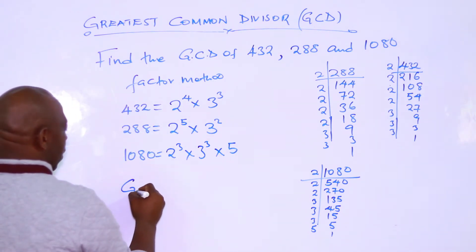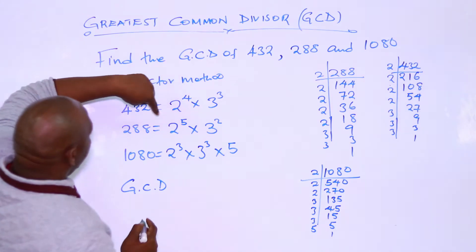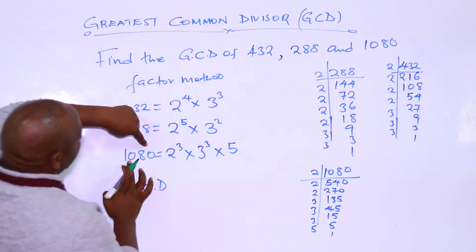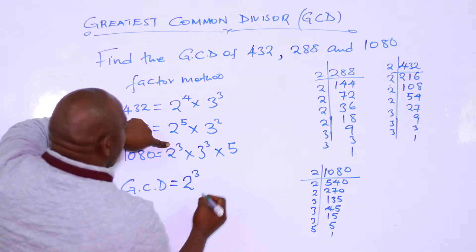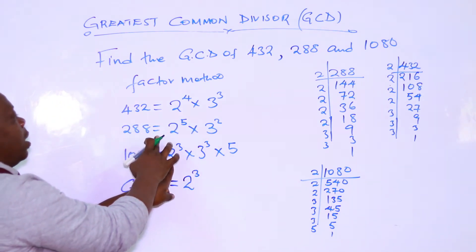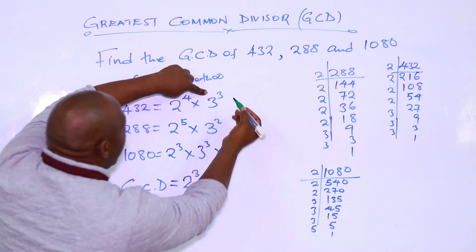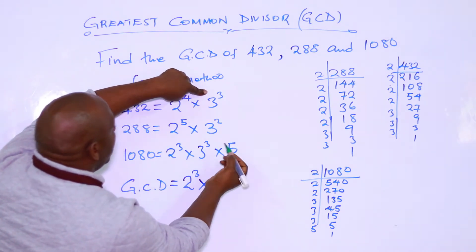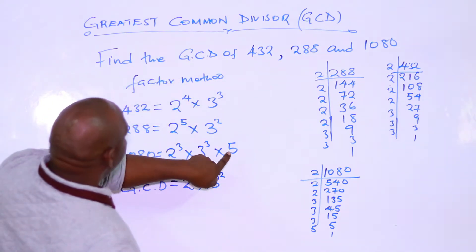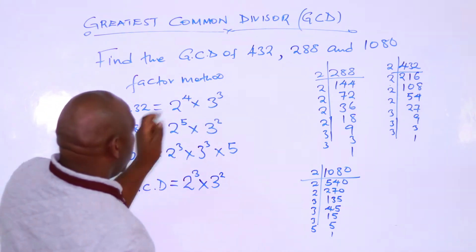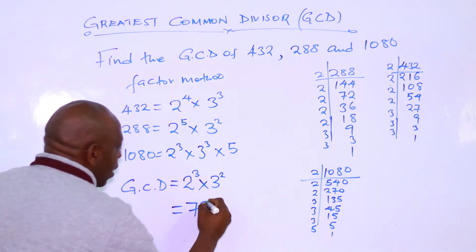So the GCD here: in the first term we have 2 to the power 4, in the second term 2 to the power 5, and in the third we have 2 to the power 3. We take the least, which is 2 to the power 3. For the 3s: we have 3 to the power 3, 3 to the power 2, and 3 to the power 3 — we take 3 to the power 2, which is common in all three. 5 is not in 288 and not in 432. So our GCD is 2 to the power 3 times 3 to the power 2, which gives us 8 times 9 = 72.